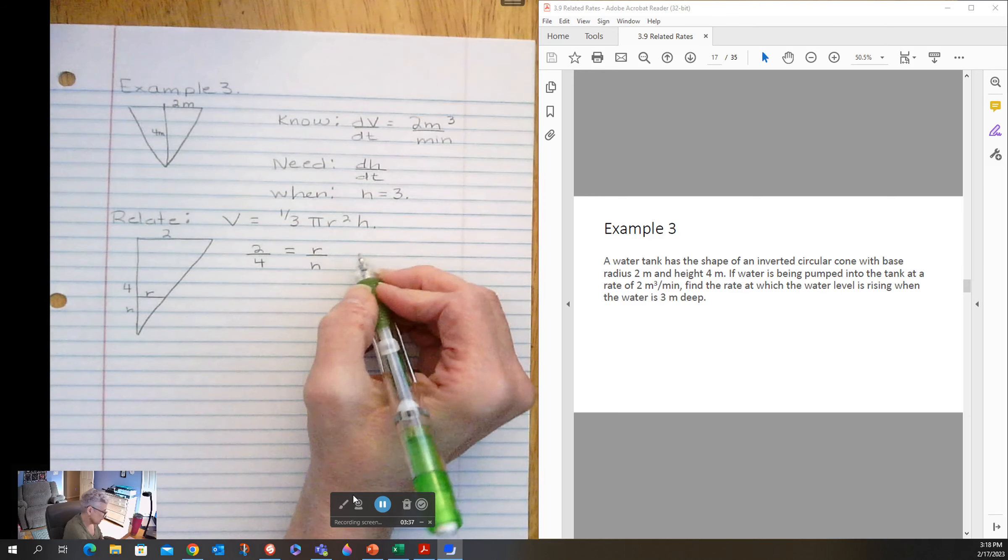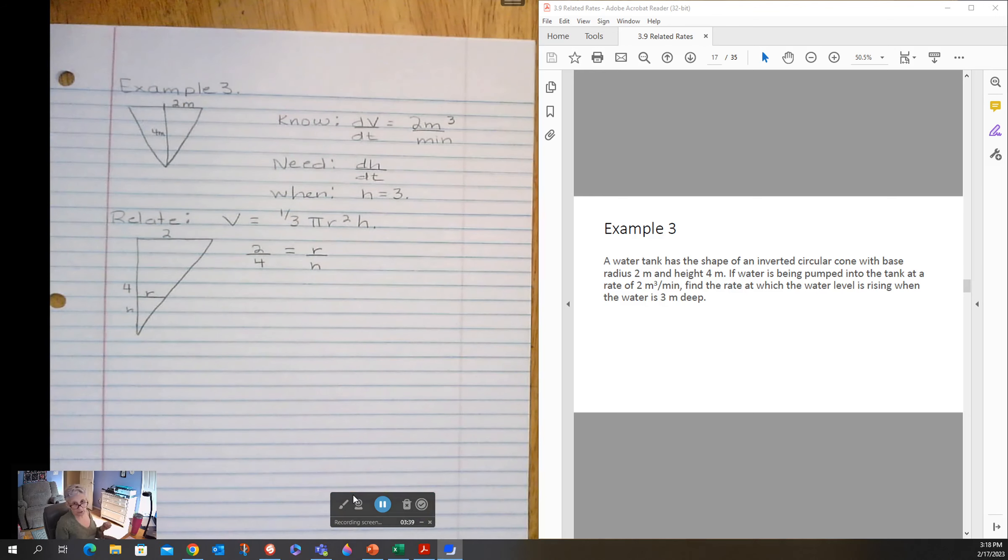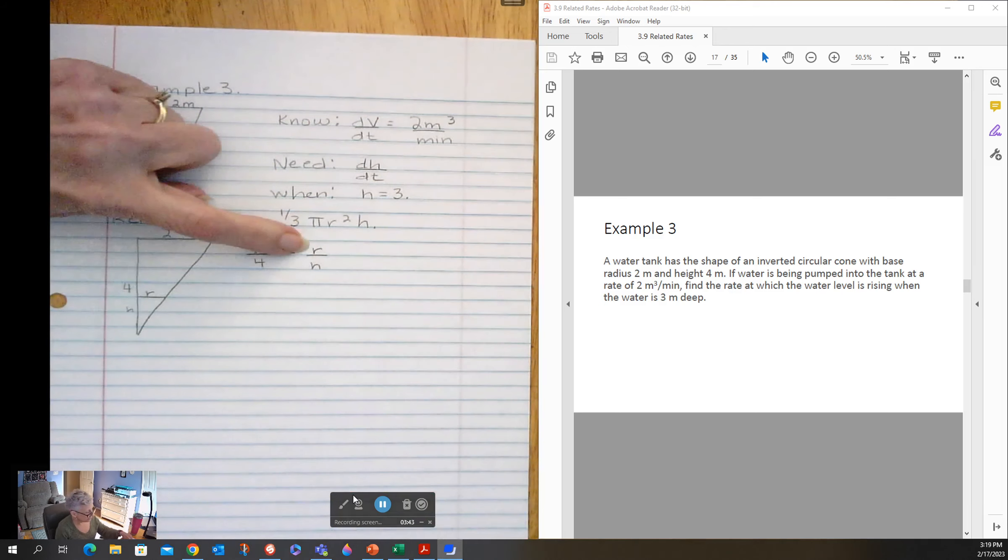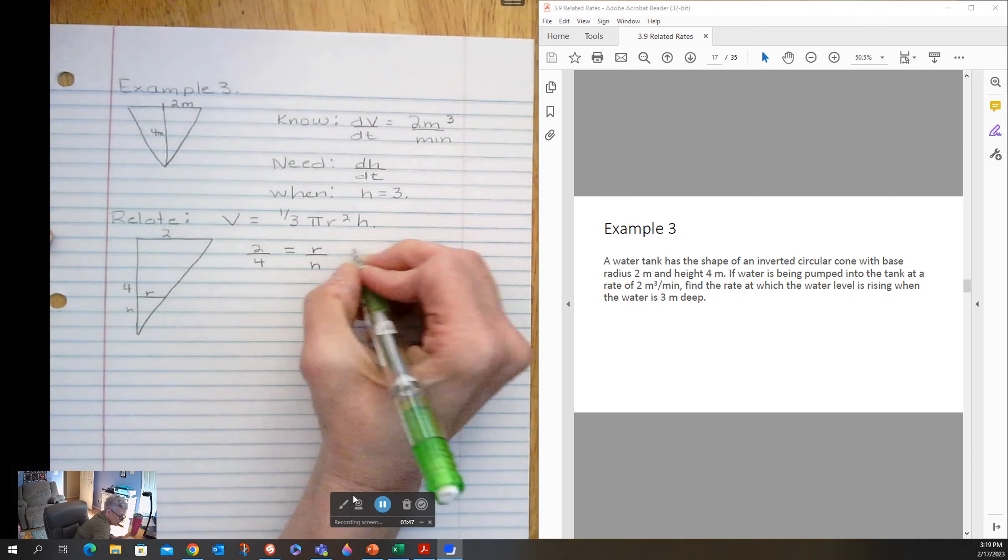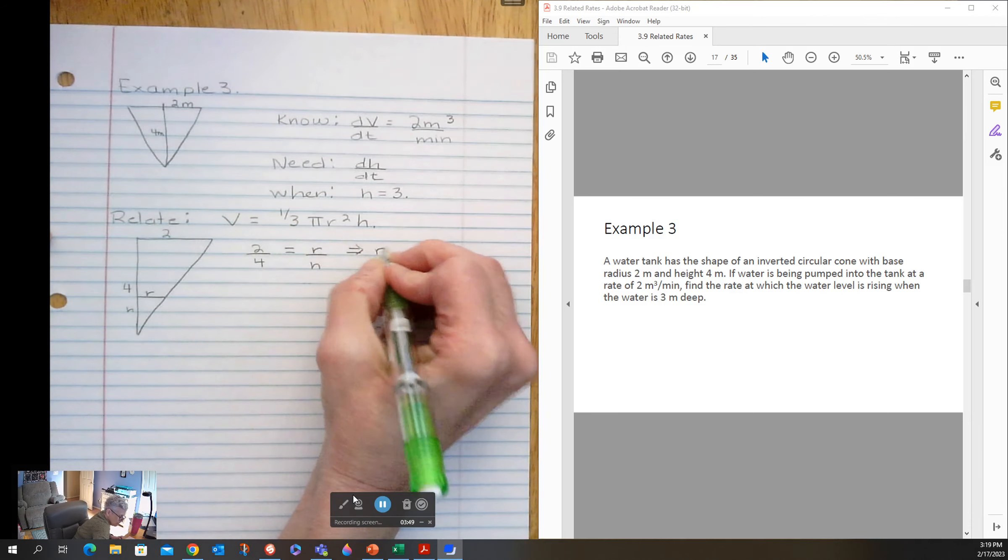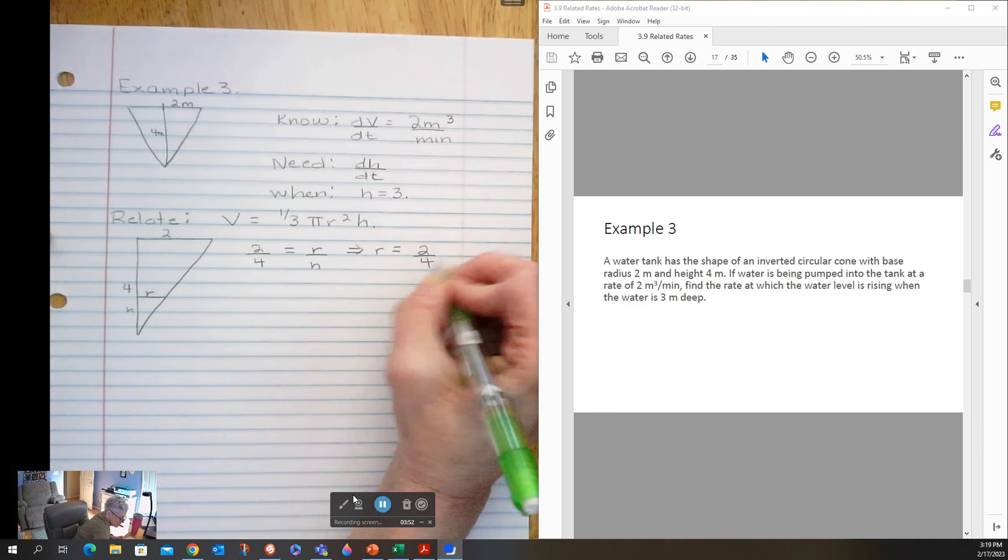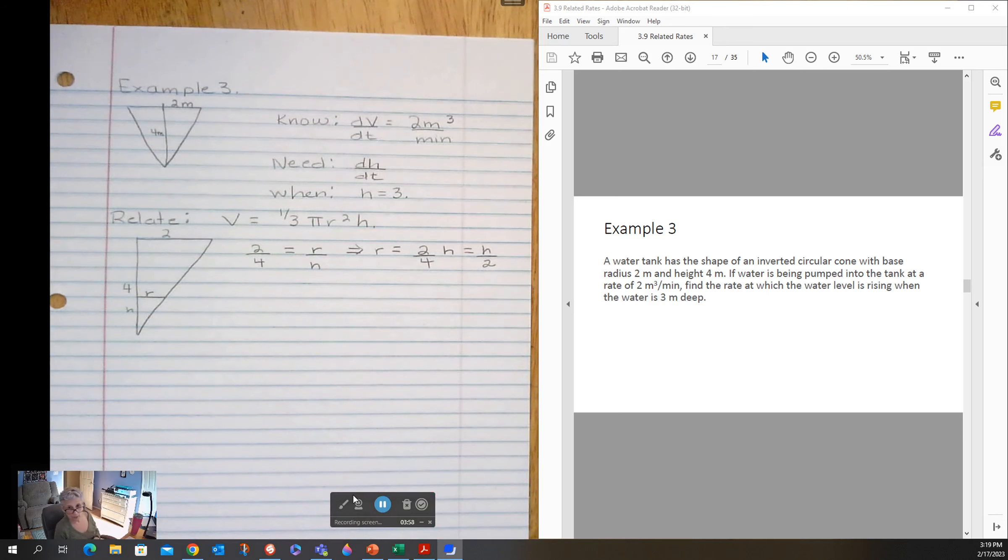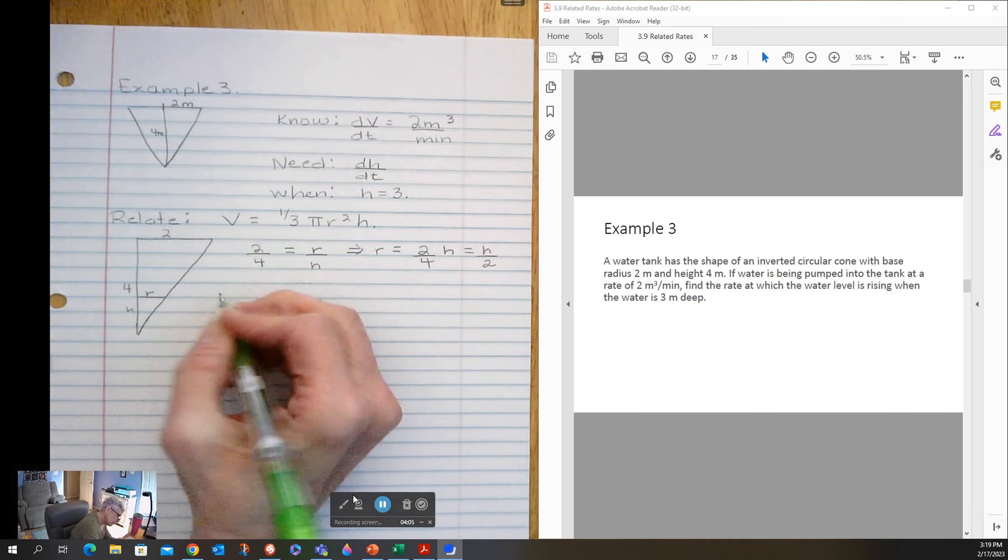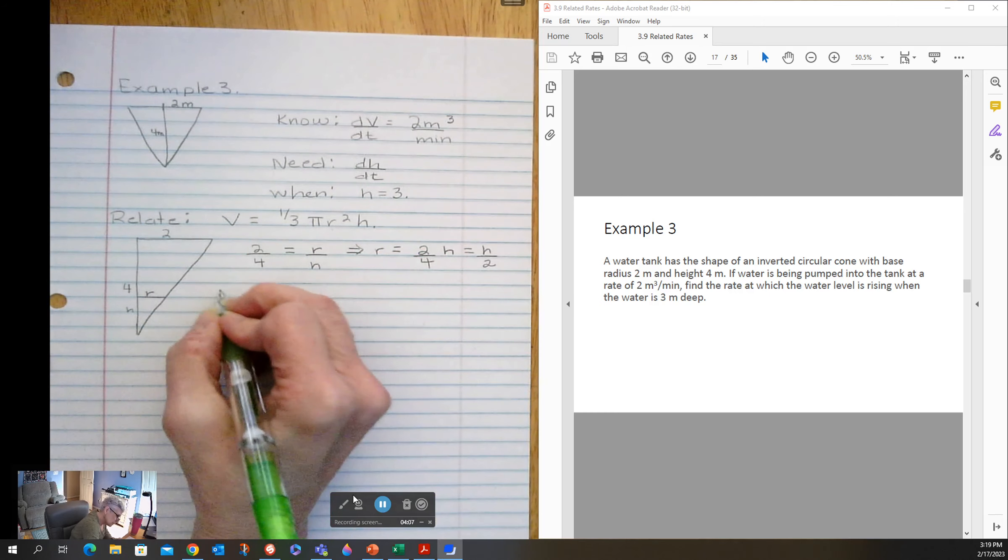So I would like to have a function that only has h's in it, so I'd like this r all by itself. So r is equal to two-fourths times h, and that's the same thing as one-half of h. And I'm going to just write it as h over two. Now I can replace the r in that volume function with h over two.